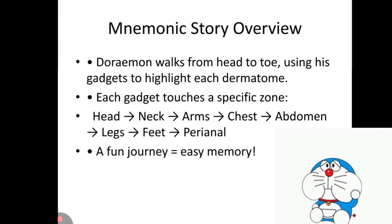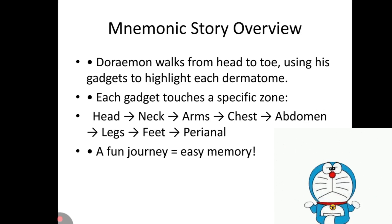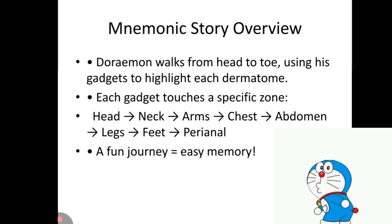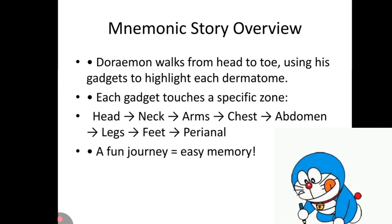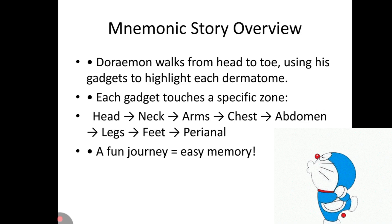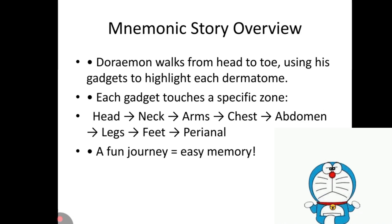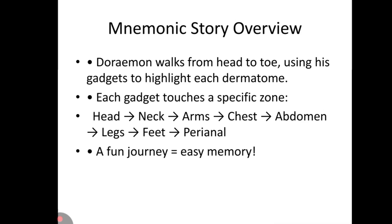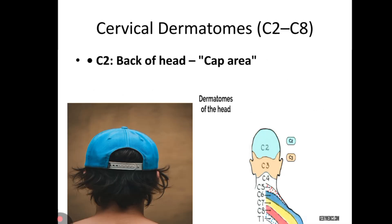In our mnemonic story, Doraemon walks from head to toe using his gadgets to highlight each dermatome — each gadget touches a specific zone: head to neck, to arms, to chest, to abdomen, legs, feet, and the perianal area. A fun journey, easy memory! Let's start with the cervical dermatomes C2 to C8. C2 dermatome is the back of the head — the cap area.